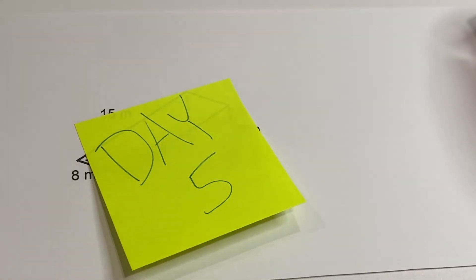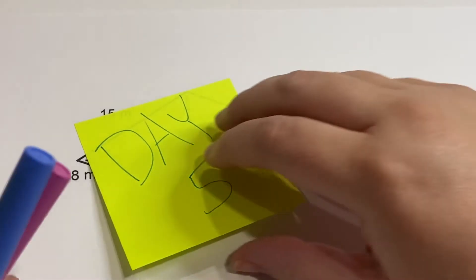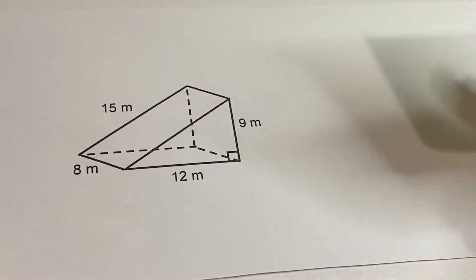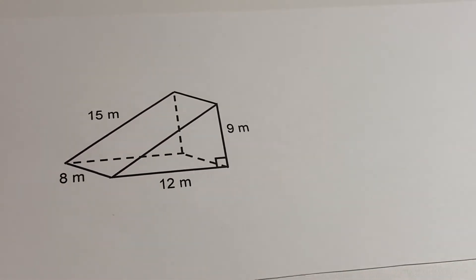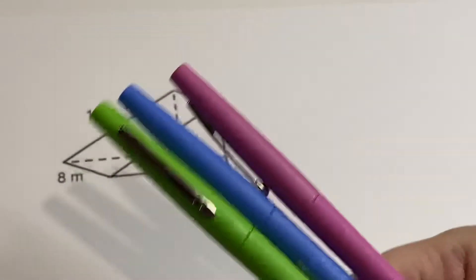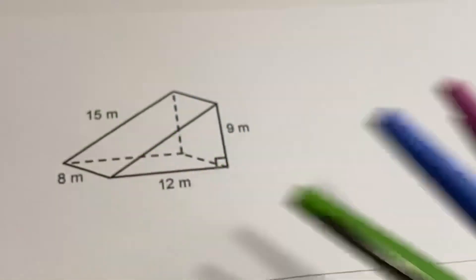Hi, welcome back. Today is day five of finding the surface area of triangular prisms. So today we're just going to look at a slightly different way of doing this, and we're going to use three flare pens. It's exciting.